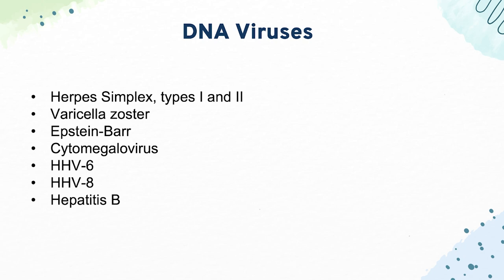Then we have HHV-6, which causes roseola — a rash that starts on the trunk and goes to the extremities. And then HHV-8, which is Kaposi sarcoma, causing dark violaceous nodules in immunocompromised patients. Finally, we have hepatitis B, which is transmitted through blood and sex. It initially presents like serum sickness: fevers, rashes, and arthralgias.